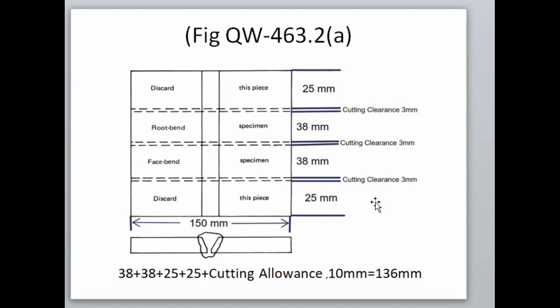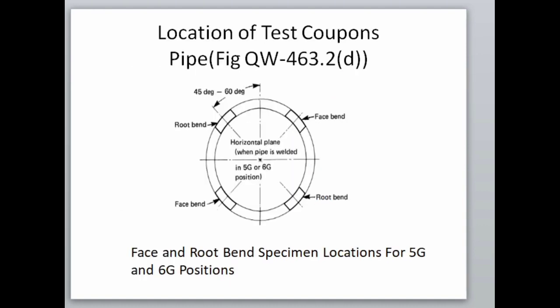Generally, we take the length as 150 mm for convenience, and we add one or two extra spaces for additional bend specimens to compensate for premature failure outside the heat-affected zone and weld metal. So the minimum dimension of the test coupon will be 150 mm length and 150 mm width. Next is the location of the bend specimen in the pipe coupon, for which we go to figure QW463.2D.